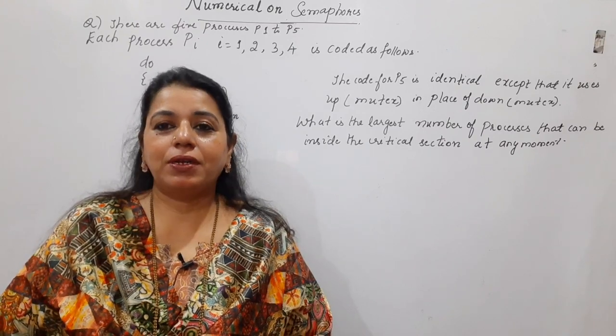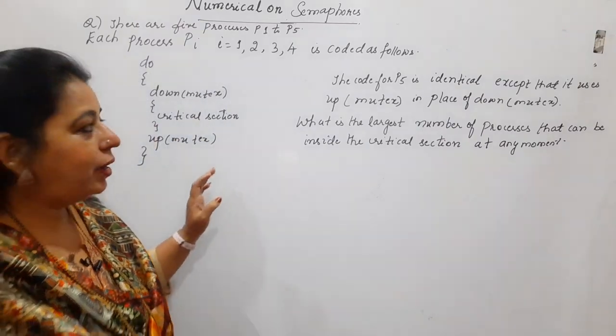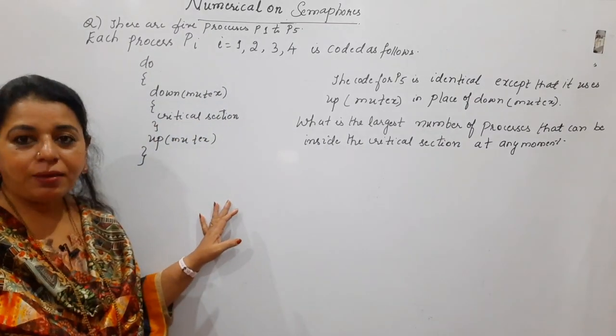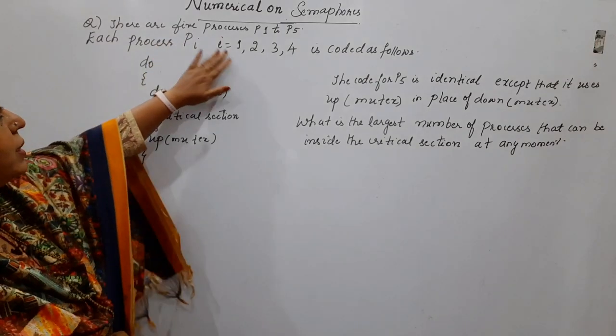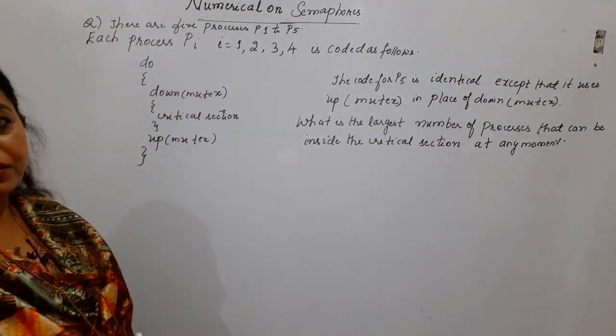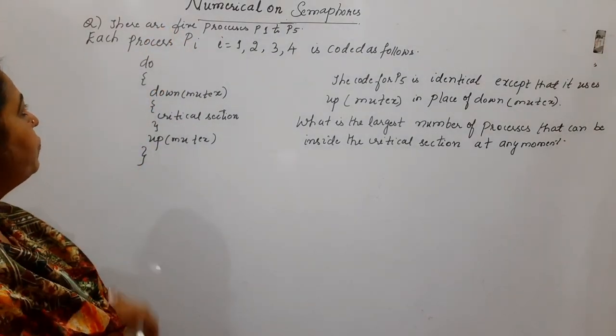So, how to proceed for the solution, I shall give you. First, let me tell you what is asked in the problem statement. The problem statement says that there are 5 processes, P1 to P5.